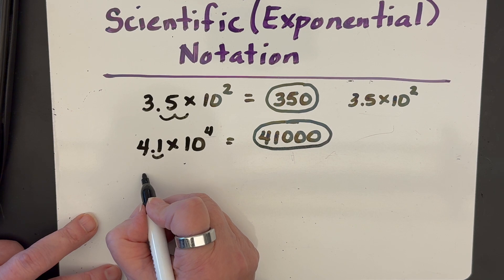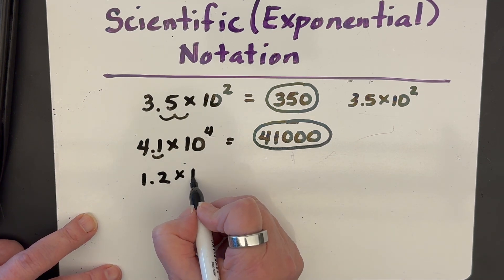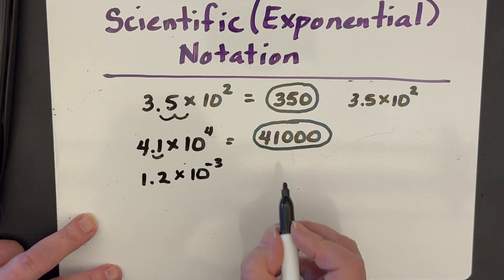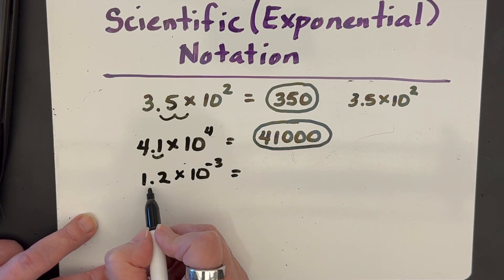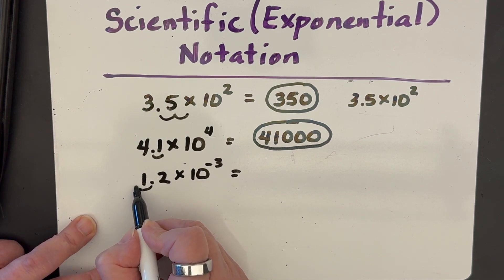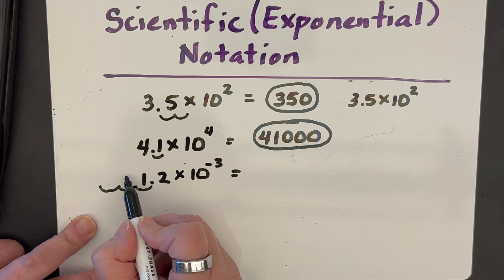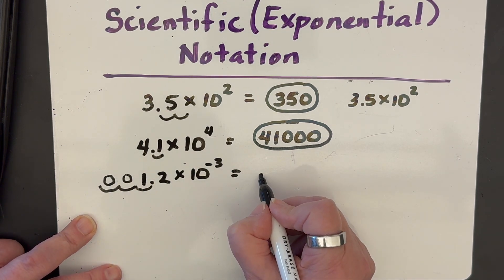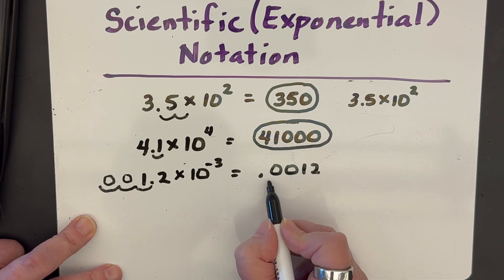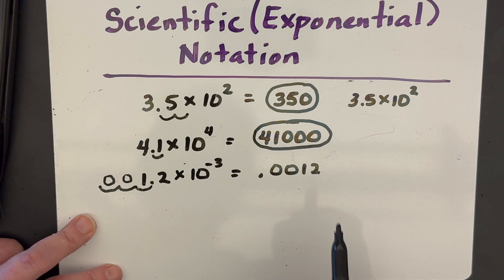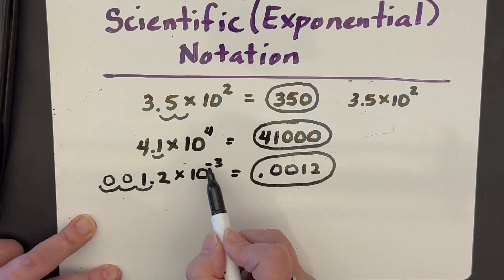Notice there's always just one digit to the left of the decimal when a number is in scientific notation. Let's try 1.2 times ten to the negative three power. Since the exponent is negative, this will be a small number, so we move the decimal to the left. The first move puts it in front of the one, but we need three total moves: one, two, three — filling in zeros. So we get 0.0012. That's a tiny number, matching the negative exponent.